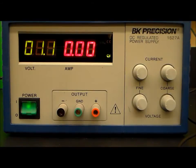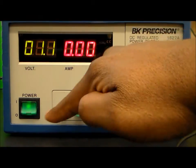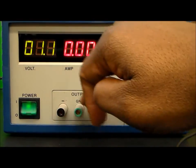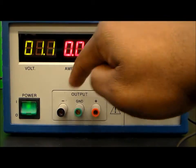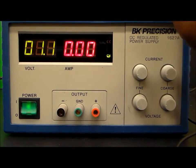In order to set our current limit, what we'd have to do is short the terminals out down here. And I forgot to mention that we do have three terminals at the bottom here, three output terminals. One is negative, one is ground, and one is positive.